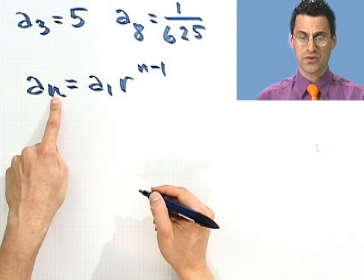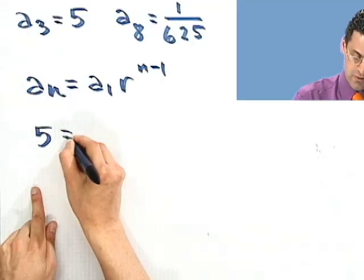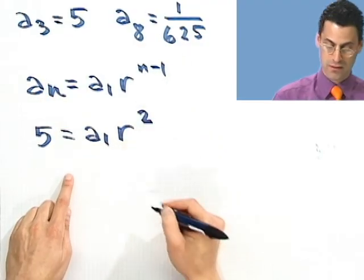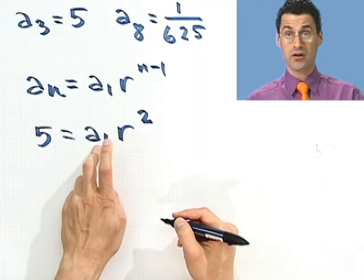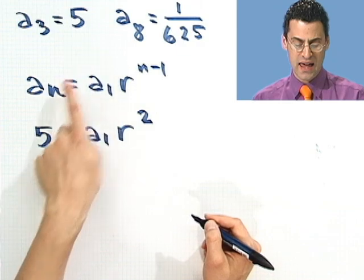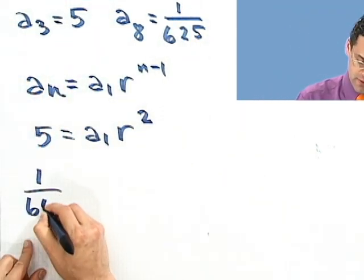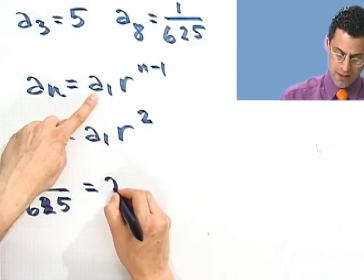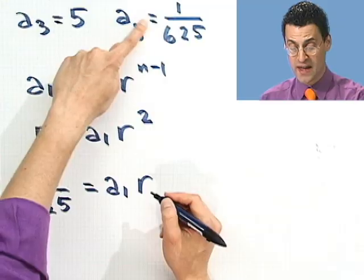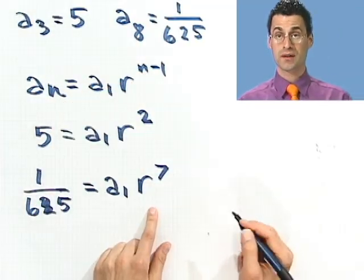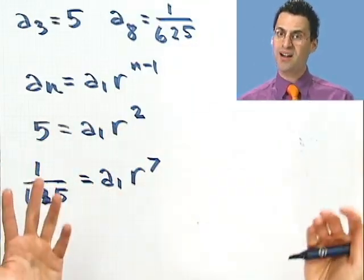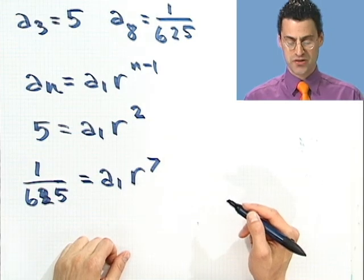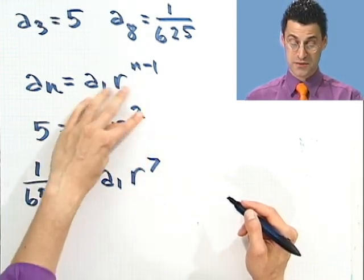So let's plug in this information. When n equals 3, I know that a3 equals 5. So I have 5 equals a1, don't know what that is, r to what power? Well, if n is 3, 3 minus 1 is 2. So there's an equation that's in a1 and r. And I don't know either of them. That's a problem. But I know one more fact. I know that when n equals 8, this number is 1 over 625. And what does that equal? What equals a1 times r to what power? Well, if n equals 8, then this would be n minus 1, which is 7. Well, look what I have. I have two equations in two unknowns. I can solve this again. Now, it's not linear. It's not linear because I have exponents. So you can't use any sort of matrix stuff now. But what I'll do is I'll use the substitution method. In fact, what I'll do is I'll take this and solve it for a1 and substitute that value in here.